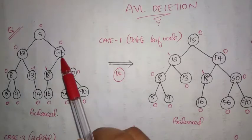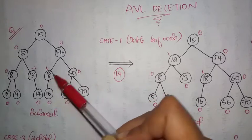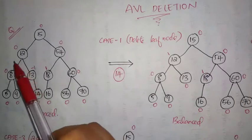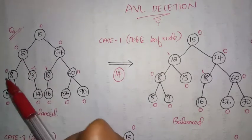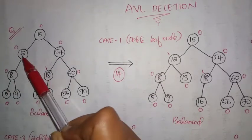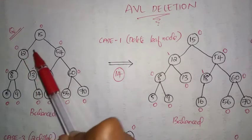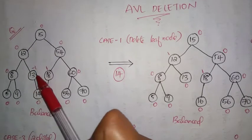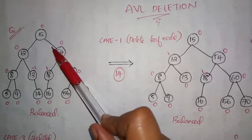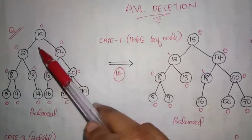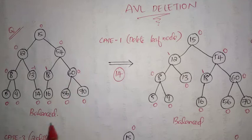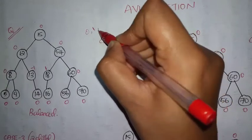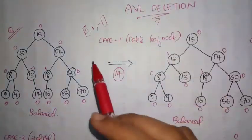In this case, height of left subtree 2 minus height of right subtree 2 equals 0. Again, left subtree 2 and right subtree 2, so 2 minus 2 equals 0. And for the root node, height of left subtree is 3 and height of right subtree is 3, so 3 minus 3 equals 0. Since the balancing factor is 0, 1, or minus 1 for every node, we can say that this tree is balanced.